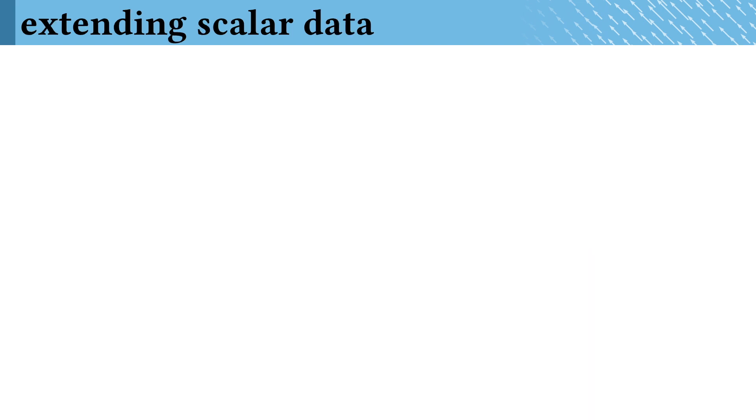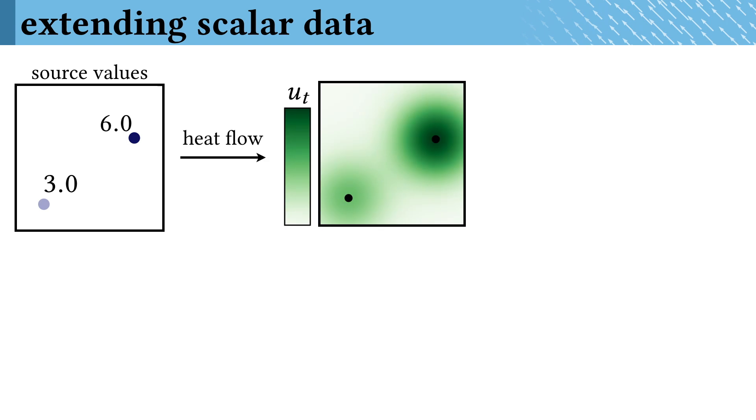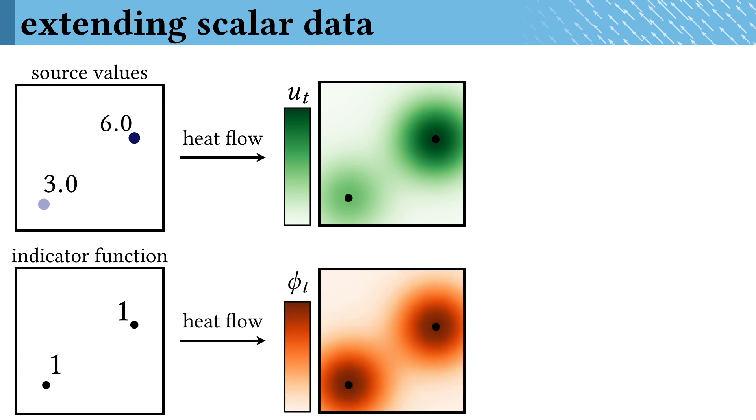We can actually use this behavior to extend data. Suppose we have values defined at two isolated points. We then diffuse these values for some amount of time to get the distribution shown in green. Then we take the indicator function at the sources, which is just the value one at each point, and diffuse it in the same way to get this orange distribution.